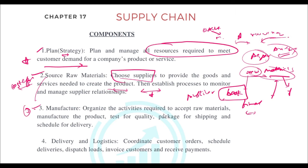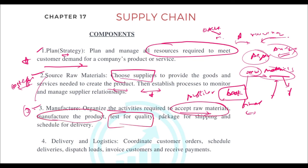The third component is Manufacture. Once you have the raw materials, you organize activities to accept them, manufacture the product, test for quality, package for shipping, and schedule for delivery. This is the general process that transforms raw materials into a finished product ready for the customer.